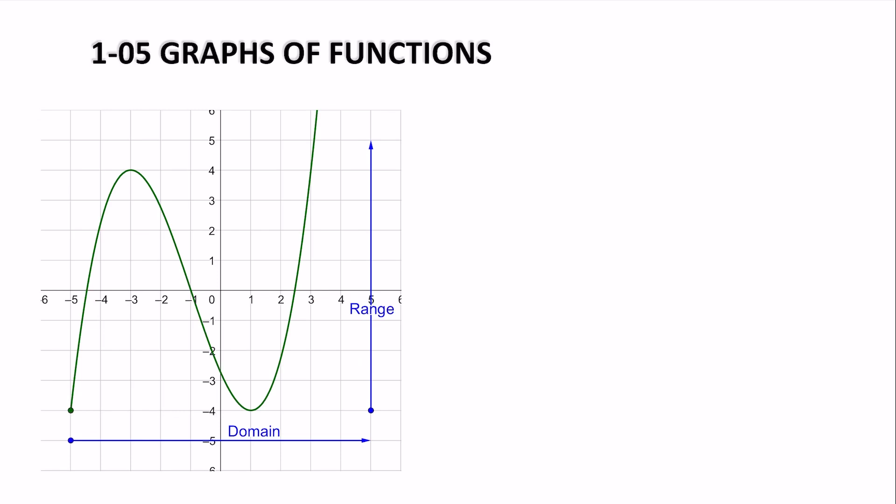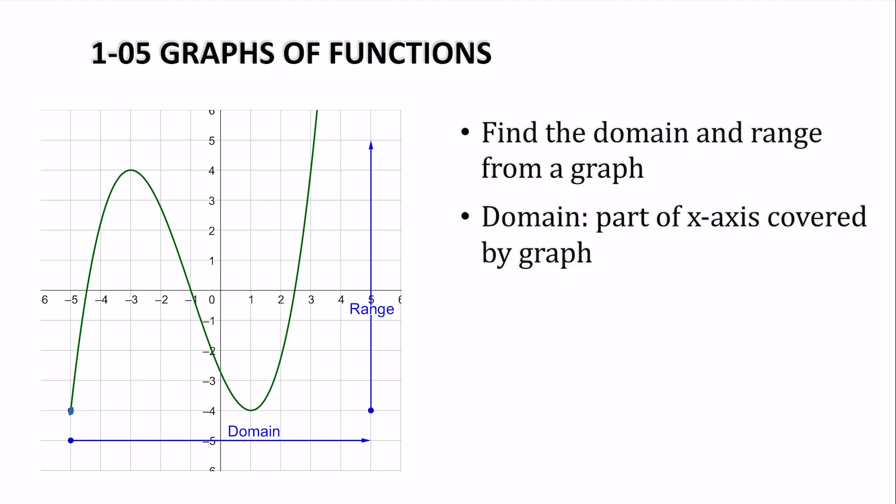Here's a nice graph. It starts here at this point and goes up and down and goes up. To find the domain and range from a graph, the domain is the part of the x-axis covered by the graph. So on this one, it starts at negative 5, and all the x-values are covered until the graph leaves the scene, and we'll just assume that it just keeps going up and to the right.